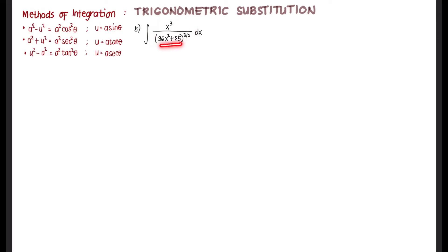We take note that 36x² + 25 is just like writing (6x)² + 5². Because of this pattern, it follows the second standard form: a² + u². Therefore we can proceed with integration by trigonometric substitution.